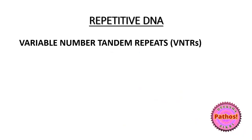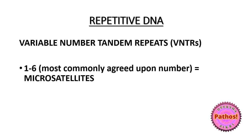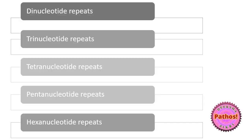Now, this repetitive DNA — also what you know as VNTRs, variable number tandem repeats — depending on how much repetition is there, could be called microsatellites. One to six base pairs is what most authors agree on. Slightly longer sequences are called minisatellites.